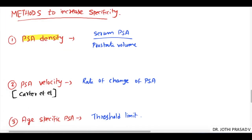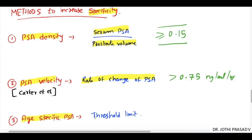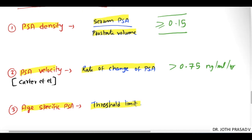Since PSA is elevated in many conditions, to increase its specificity in detecting malignancies, three parameters were developed. The first is PSA density — serum PSA divided by prostate volume — which, when greater than or equal to 0.15, is highly suggestive of malignancy. The second is PSA velocity by Carter et al., the rate of change of PSA; when greater than 0.75 ng/ml/year it is highly suggestive of malignancy.